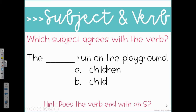Which subject agrees with the verb? This time, they're not giving us the subject, but they are giving us the verb. Let's find that first. The blank run on the playground. What's our verb? The action is the word run. There's a hint at the bottom — does the verb end with an S? No. So this time we need the plural subject. Which one of those is plural — the children run or the child run? Which one sounds better? Children — the plural noun there.